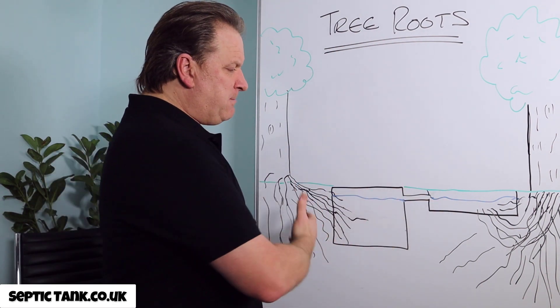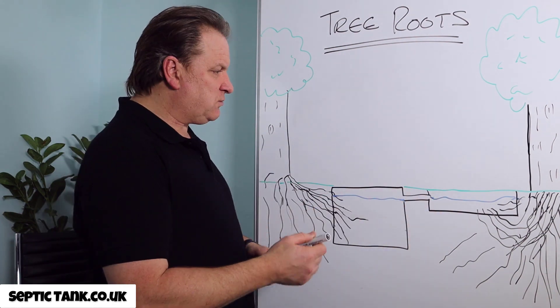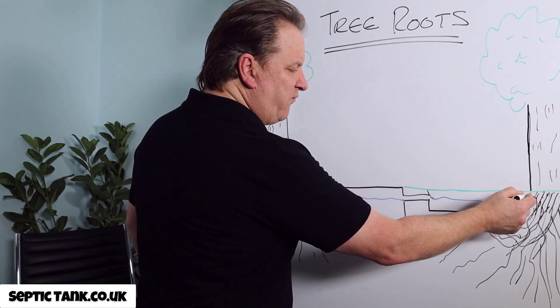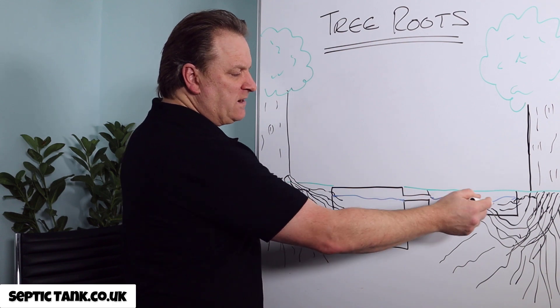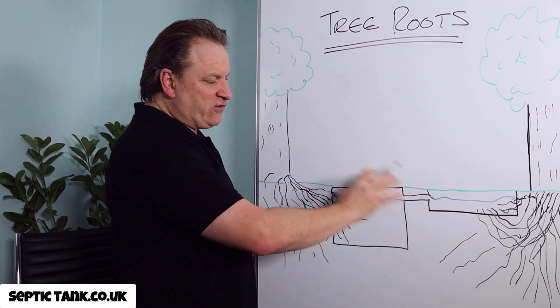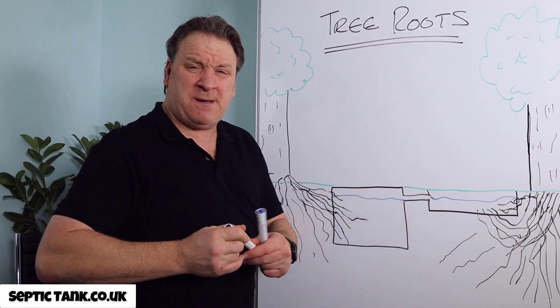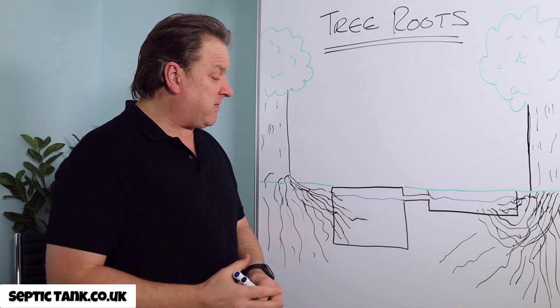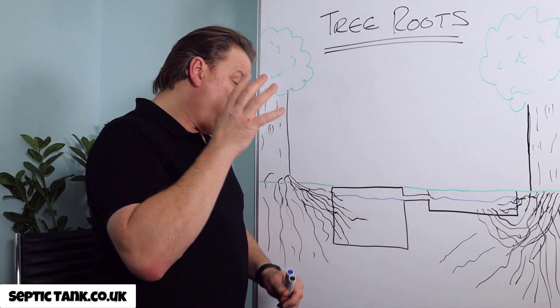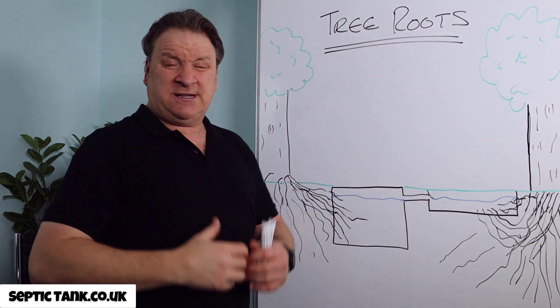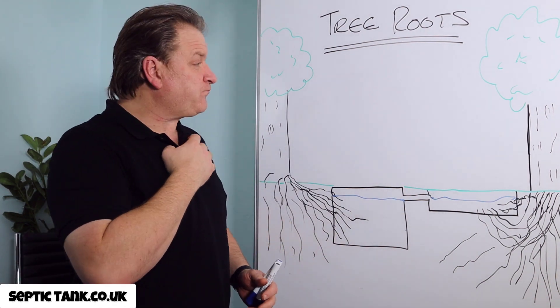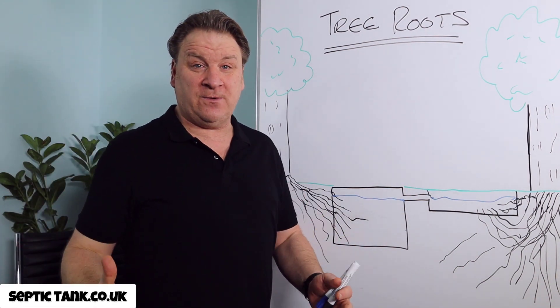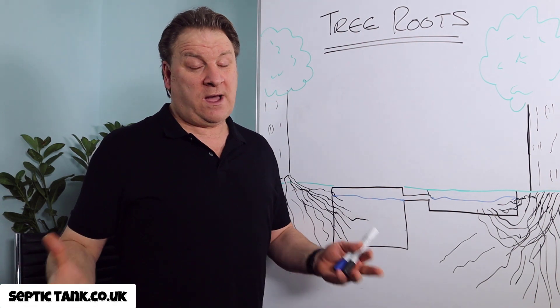So what do many people do if they find themselves in a situation where the roots from the trees have penetrated and are penetrating a septic tank and drainage field? Well, many people think it's a bad thing. And for that reason, they replace the septic tank and soak away and spend thousands doing that. So is that the right thing to do? Well, no, I don't think it is.